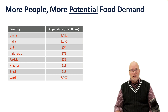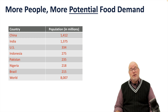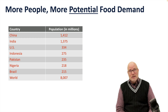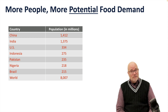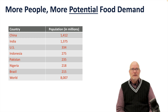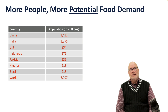Topping that list is China at 1.4 billion people, India at 1.375 billion people, and then there is the United States at 334 million. It's important to realize 334 million people in the United States — take that times four and you get close to the population of China. Moving down the list: Indonesia, Pakistan, Nigeria, and then Brazil. Most of those are in what we will term the developing world.